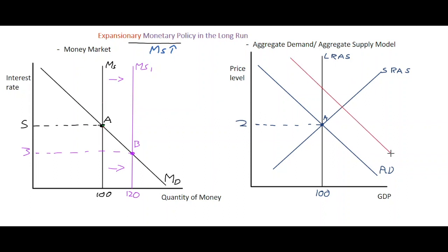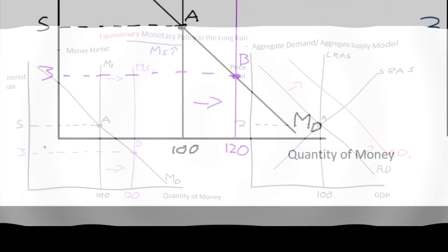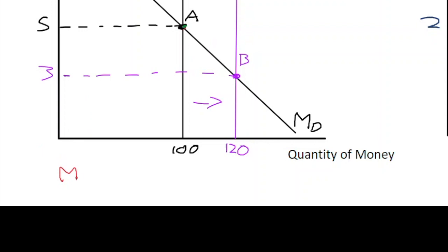Why is this the case? Why would the AD curve shift over to the right like this here, so AD1 rightward shift? Well, the reasoning for this is as follows: as the money supply increases in the economy, that means that the interest rate drops...